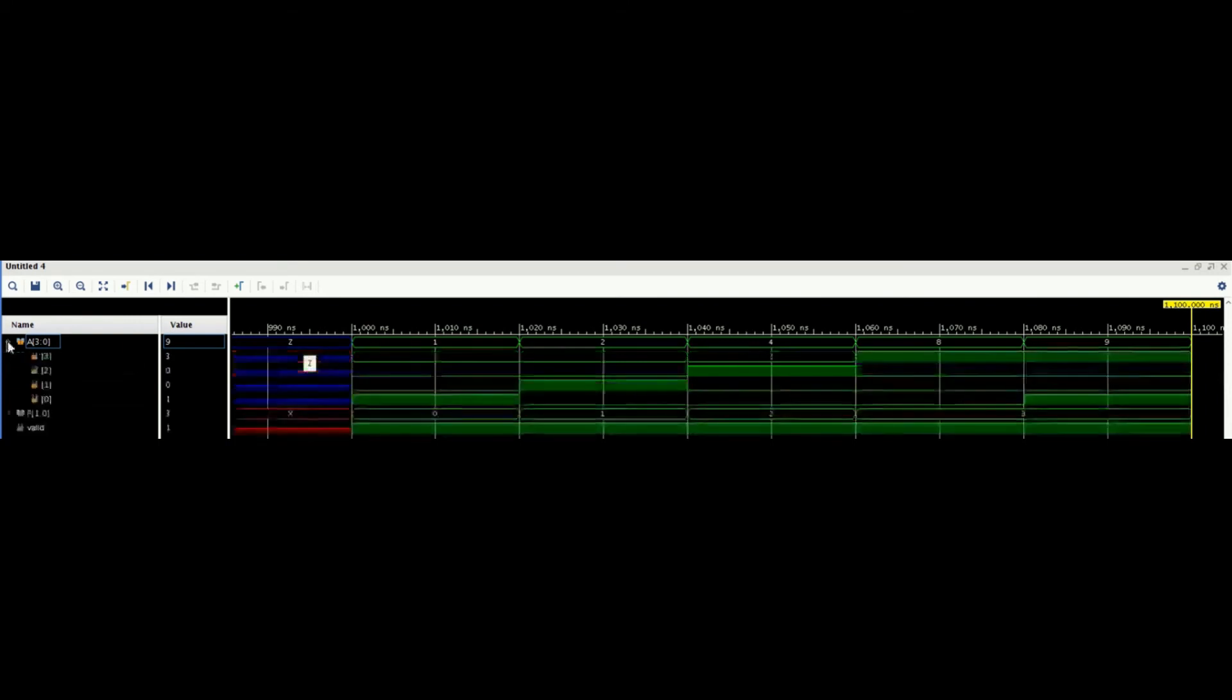Firstly I have given the input as 1. So 1 means 0th index is high at the input. At the output we are getting 0 as an index. That means A0 is high along with the valid signal as high.